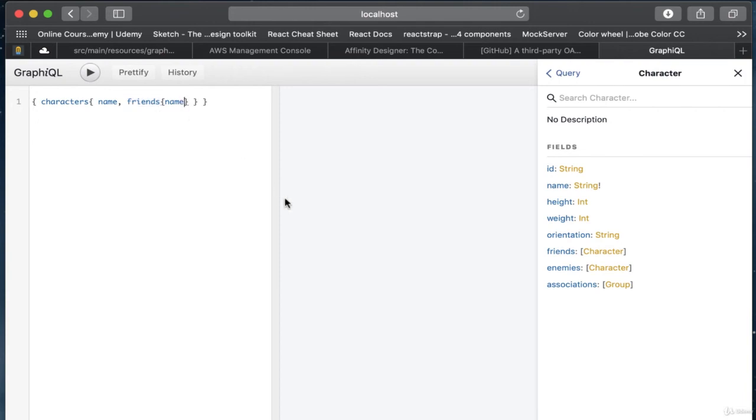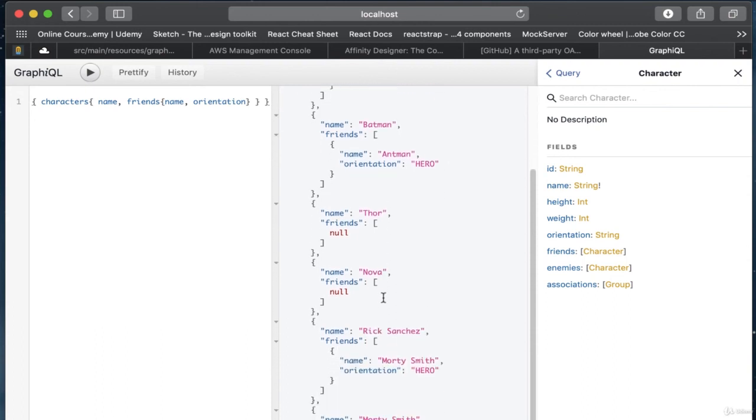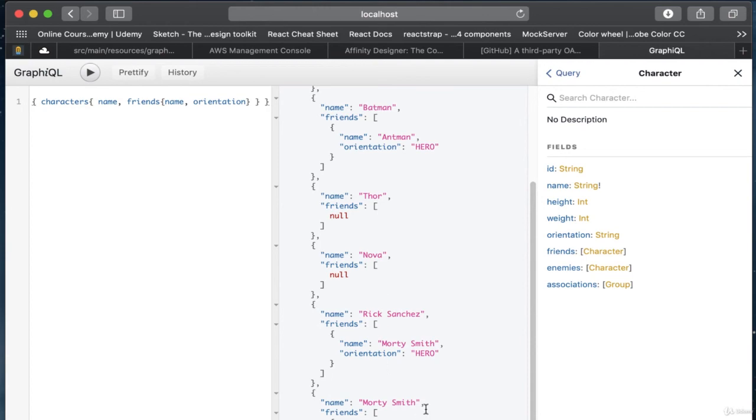So all we have to do, then, is ask for friends in addition to, like, the name field that we wanted. Since this is a different type, we need to specify what fields in that type we want returned. So, for example, we could ask for the friend's name and the orientation. So now when we execute this, we see that the first character has the name displayed. And then it has an array of characters. And this is a link to a separate character type that is noted as a friend of this character. And you can see that we, indeed, had the name and orientation returned for the friend. And that goes down through each of these that we've asked for.